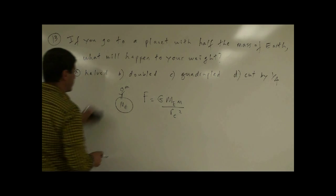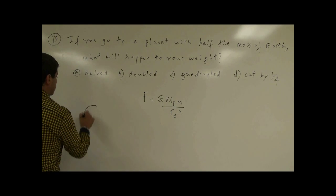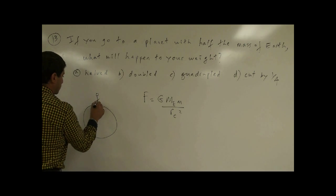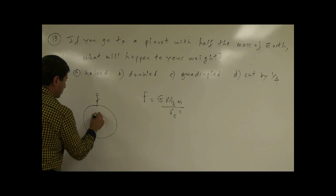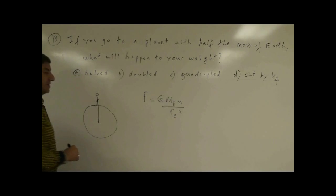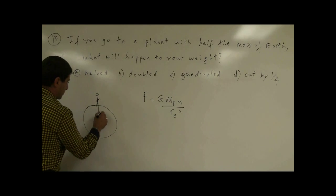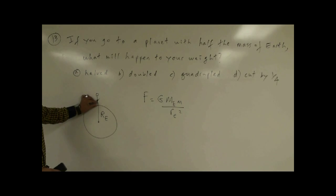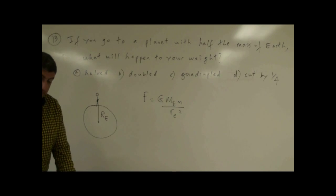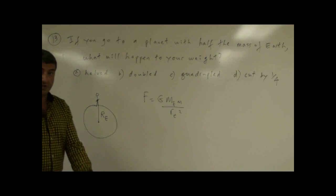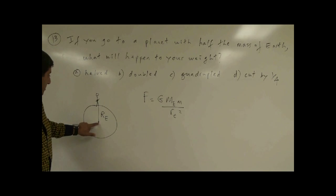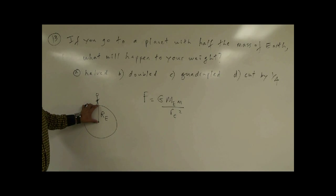If we draw this a little bigger, you can see this is going to be the Earth and this is you. The distance from here to here is pretty much going to be the same as the radius of the Earth, because we are so small that the distance between our center and the center of the Earth is pretty much the same as from the center of the Earth to the surface.